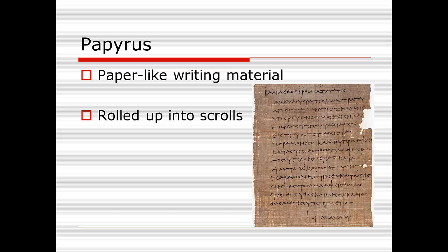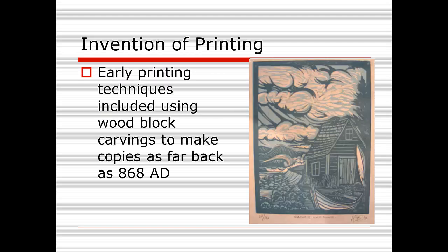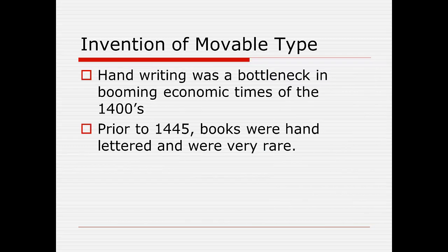From 4000 BC up through about the 1400s, the main form of graphic communication was handwriting. There were some forms of printing — wood blocks you could carve a picture out of, ink up, and print onto paper — but they were not very common. Books were very rare; they were handwritten and it took a month or more to make a copy of one book. As a result, not very many people knew how to read because there wasn't anything to read. Handwriting was a big bottleneck in the booming economic times of the 1400s.